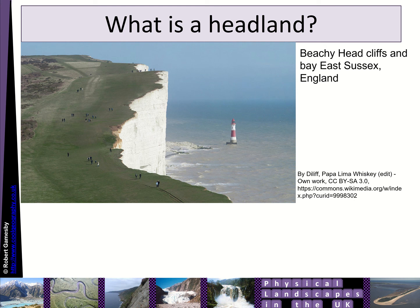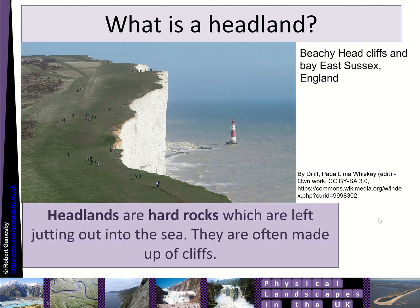Hello and welcome to a GCSE explainer about erosion landforms at the coastline. This one's going to focus on headlands, bays, and cliffs. Here you can see a vertical structure next to the coastline — you can see people there for scale at Beachy Head cliffs in East Sussex, England. You can see the lighthouse here, there's been a rock fall, and this is a headland sticking out into the sea.